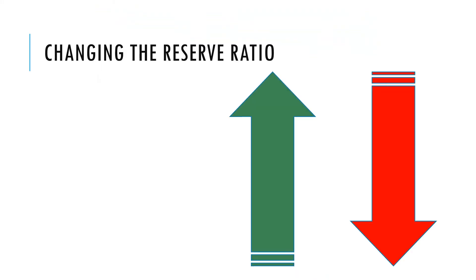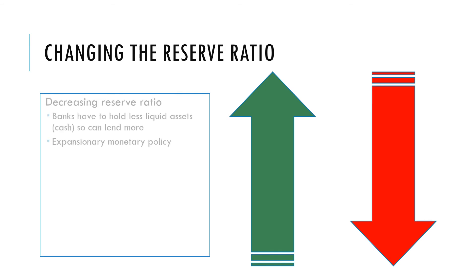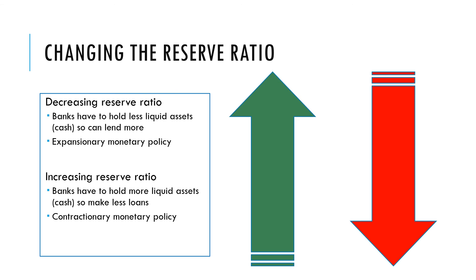So what's the impact of changing the reserve ratio? Well, if we decrease the reserve ratio, so banks have to hold less of depositors' money in their vaults, then they can lend out more. This will lead to more investment, more borrowing, more consumption — we call this expansionary monetary policy. Increasing the reserve ratio will have the opposite effect: banks have to hold more of depositors' money and can't lend out as much, meaning less borrowing, less investment, less consumption — this would be contractionary monetary policy.